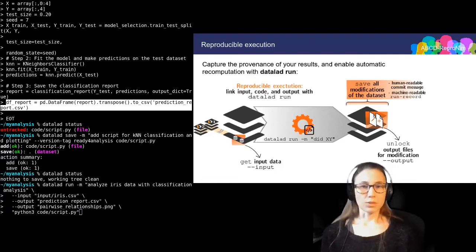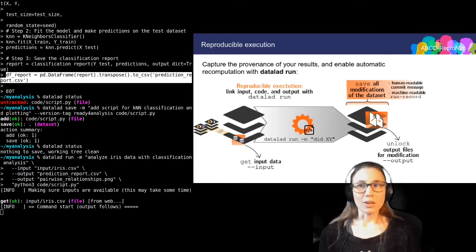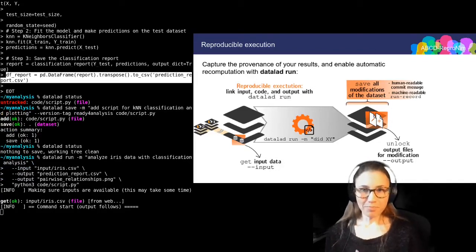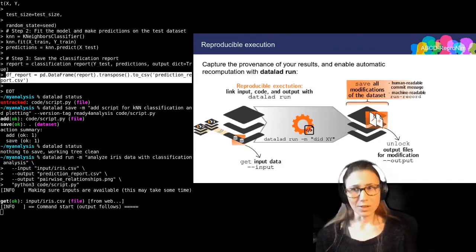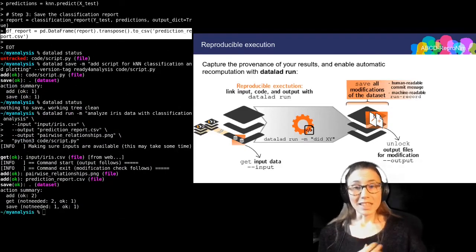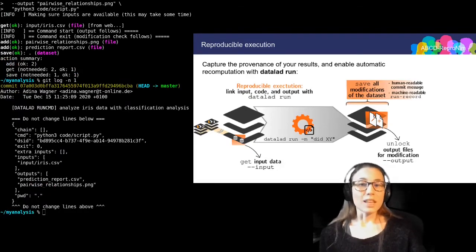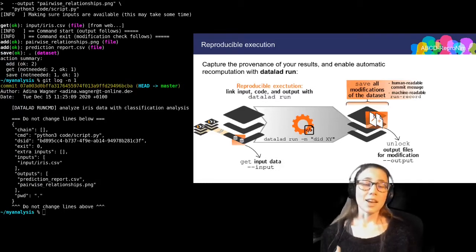So now when I execute this, DataLad will retrieve all inputs, unlock all outputs, execute the command and thus the script, and then save all of the results. And the result of this is not only the results of the data analysis, but also a machine-readable record in the dataset that includes everything I've specified as digital provenance and attaches it to the result.